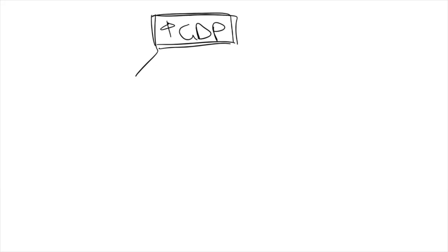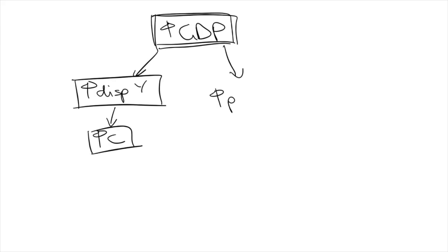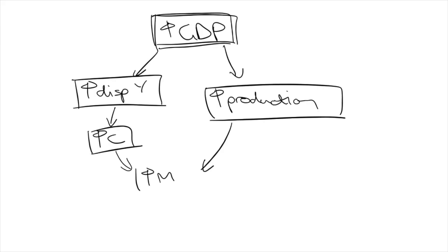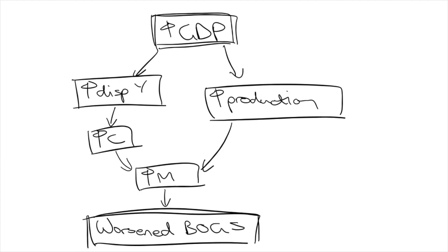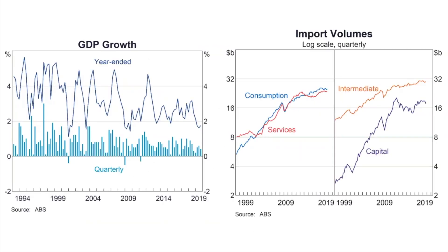The next cyclical influence on BOGS is domestic growth. Reflecting the previous point, when Australia is experiencing economic growth, we have higher disposable income and production increases, and this contributes to higher import spending and more debits from our BOGS account. As you can see from the graphs, drops in Australian GDP growth — such as during the GFC — coincide with drops in import volumes.